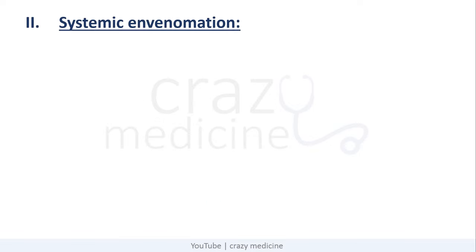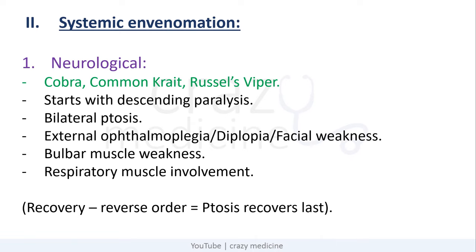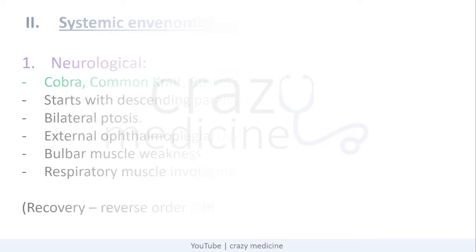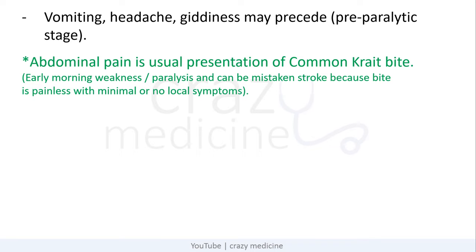Now coming to systemic envenomation, first neurological symptoms. Neurotoxicity is commonly found with cobra and common krait, and to some extent with Russell's viper. Paralysis starts with descending paralysis — it causes bilateral ptosis, followed by external ophthalmoplegia causing diplopia, then facial weakness and involvement of bulbar muscles causing dysarthria, and finally respiratory muscle involvement causing respiratory paralysis, which is the cause of death. Recovery is usually in reverse order, that is ptosis recovers last. Symptoms like vomiting, headache, and syncope may precede paralysis — that is the pre-paralytic stage. Abdominal pain is a usual presentation for common krait bite, which typically presents as early morning weakness or paralysis and can be mistaken for stroke, since krait bite is painless with minimal local symptoms.